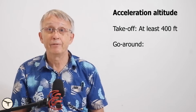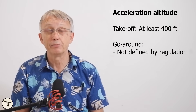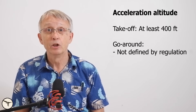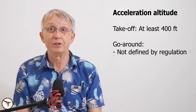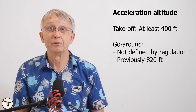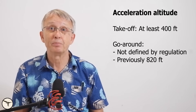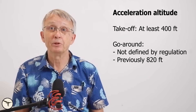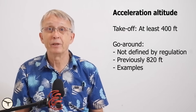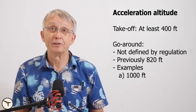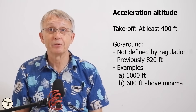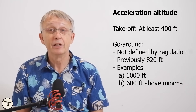Neither EASA nor the FAA mandates a fixed minimum acceleration altitude for the go-around. Instead, it is defined by the operator, taking into account factors such as aircraft performance capabilities, obstacle clearance requirements, and the operator's approved procedures. When I was young, the rule was 820 feet, and if the acceleration altitude for the go-around was higher, it was printed on the approach chart as a note — for example, 'climb to 1200 feet before level acceleration.' Today practices vary by operator. One ATR operator uses a fixed 1000 feet, while another defines the acceleration altitude as 600 feet above approach minima. Both procedures are operationally sound, provided they are supported by proper performance calculations and procedure compliance.